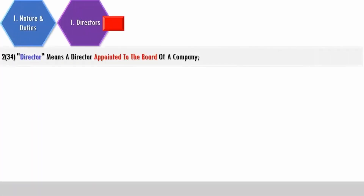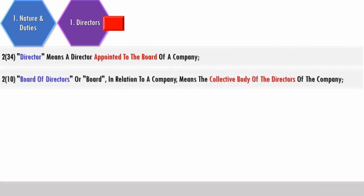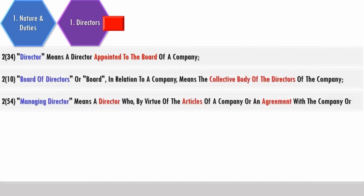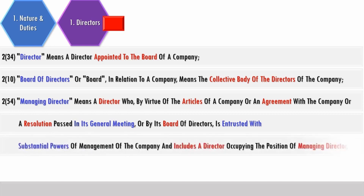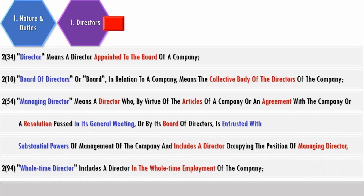Directors of a company — nature and duties of directors. A director is appointed to the board of a company. The board of directors is the collective body of the directors. A managing director is a director who, by virtue of articles, agreement, board resolution, or a resolution in a general meeting, is entrusted with substantial powers of management, including a director occupying the position of managing director. A whole-time director includes a director in the whole-time employment of the company.